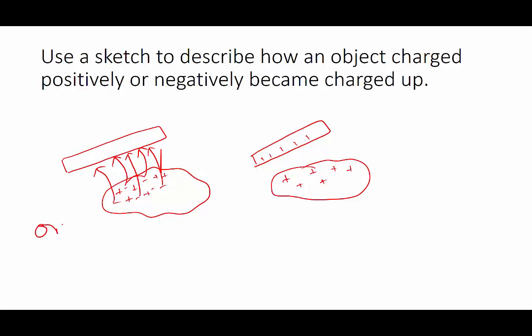Now alternatively, we could find that we have the transfer the other way. So the electrons move from the rod to the cloth.